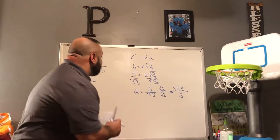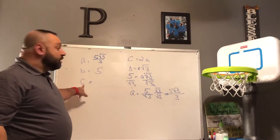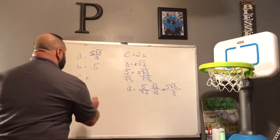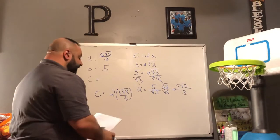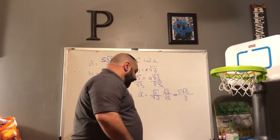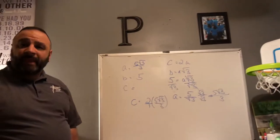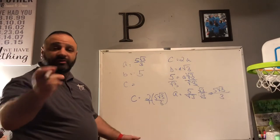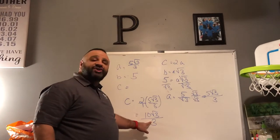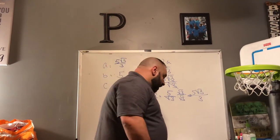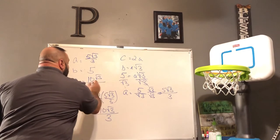Now that A equals 5√3/3, how do I find C? It's two times that: C equals 2 × (5√3/3) equals 10√3/3. We cannot reduce that fraction, so the final answer for C in number seven is 10√3/3. Any questions? You can send a text or email asking about that.